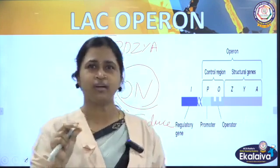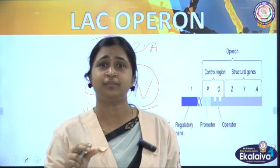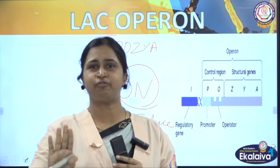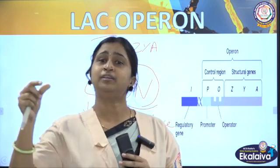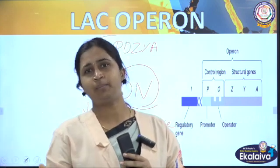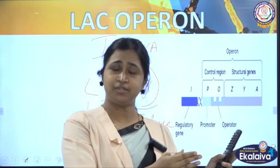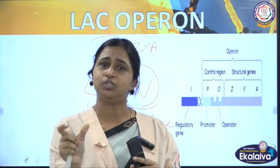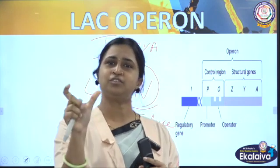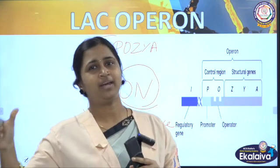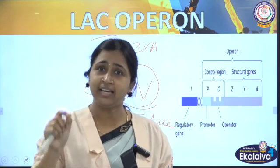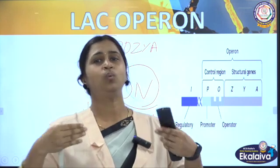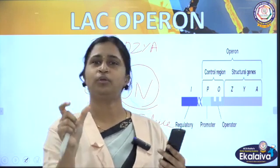When the particular substance — lactose — is present, it will switch on. To remember that, use the word LION: L for Lactose, I for Induces, and O for On mode. Lactose is an inducer; when it is present, the particular gene will express and the system is in on mode.